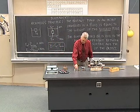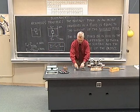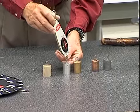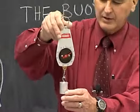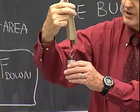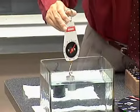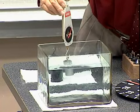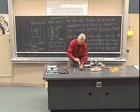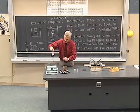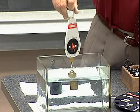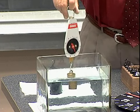We can further illustrate that with some other masses. Here I have a number of masses that have approximately equal volume, so when they're totally immersed in the water they will displace approximately the same amount of water. Starting with a cylinder of aluminum — it has a mass of about 100 grams — when we immerse it in the water, its apparent weight is reduced by about 35 grams. Similarly, a brass cylinder of about the same volume, when immersed in the water, also has its weight reduced by about 35 grams. Because it has the same volume, the buoyant force on it is the same.